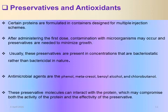Certain proteins are formulated in containers designed for multiple injection schemes, and contamination with microorganisms may occur. Mercury-containing compounds such as phenyl mercury nitrate, as well as benzyl alcohol and chlorobutanol, are antimicrobial agents mentioned in the USP.